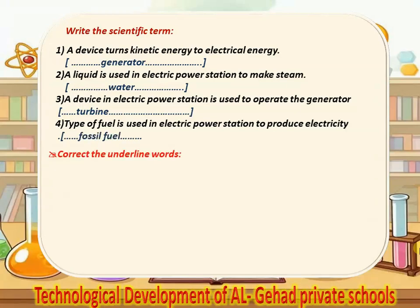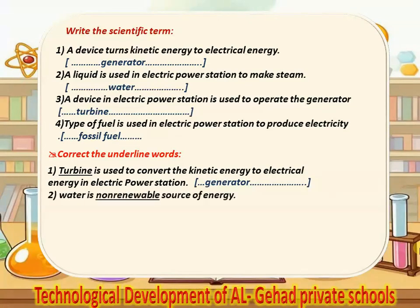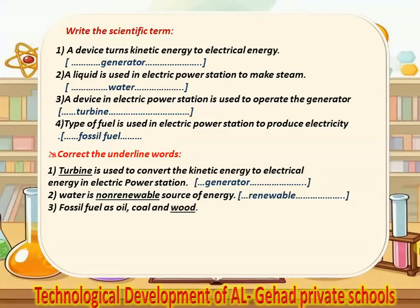Correct the underlined words. Number 1, turbine is used to convert the kinetic energy to electrical energy in an electric power station — No, generator. Number 2, water is a non-renewable source of energy — No, renewable. Number 3, fossil fuels, as oil, coal and wood — No, natural gas.